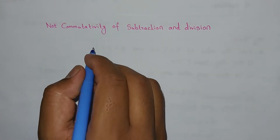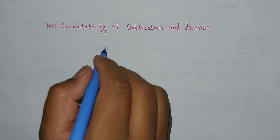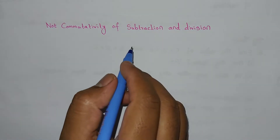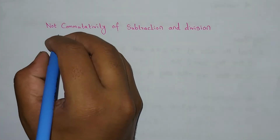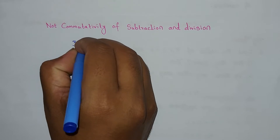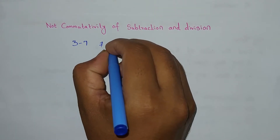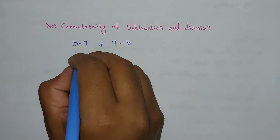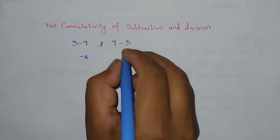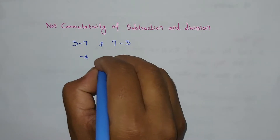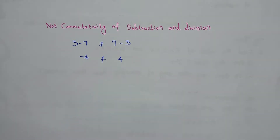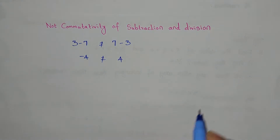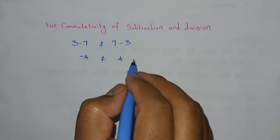So addition and multiplication are commutative in nature. However, subtraction and division are not commutative. For example, 3 minus 7 is not equal to 7 minus 3. 3 minus 7 gives minus 4, while 7 minus 3 gives positive 4. These are not equal, so subtraction is not commutative in nature.